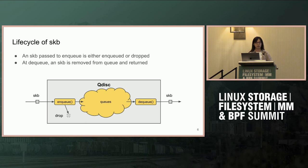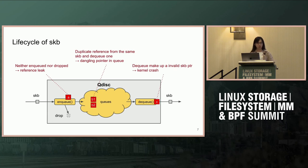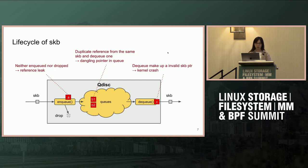When designing BPF QDISC, we need to take care of the lifecycle of SKBs, because if they are not handled properly it will break the kernel. There are three possible situations. In enqueue, if you neither enqueue nor drop the SKB and then return from the enqueue BPF program, that's a reference leak and you'll run out of memory quickly. Also, if users can duplicate a reference from the same SKB and enqueue only one, the other SKB in the queue becomes a dangling pointer. A previous RFC issue was that a user could craft an invalid SKB pointer and return it to the kernel, crashing it.